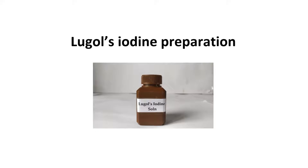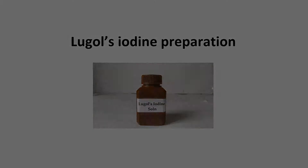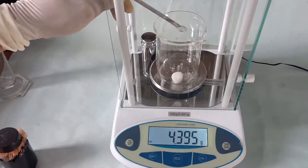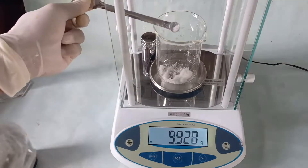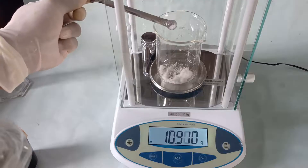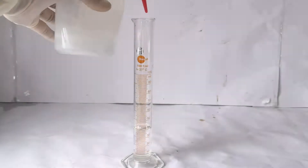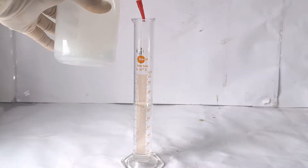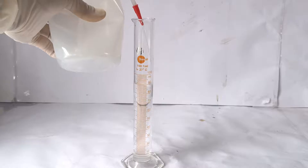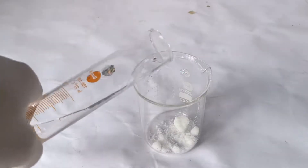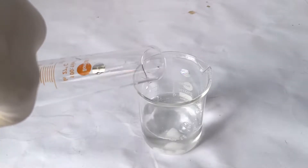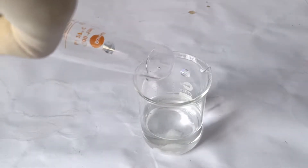To prepare 100 ml of Lugol's iodine solution, first weigh 10 grams of potassium iodide in the beaker. Then measure 100 ml of distilled water using the graduated cylinder, pour this into the beaker containing the iodide salt, and stir to completely dissolve the salt.